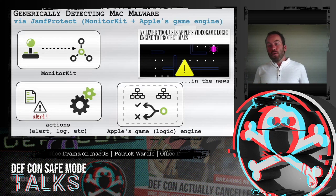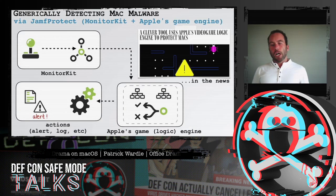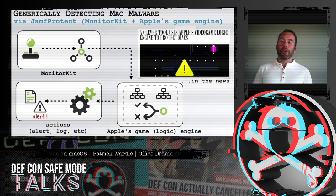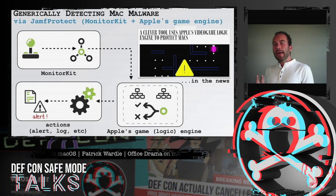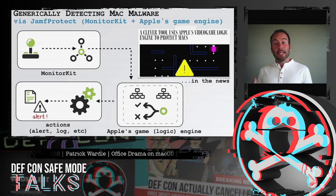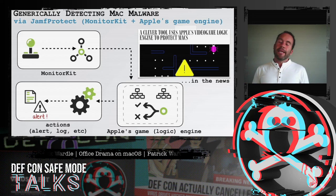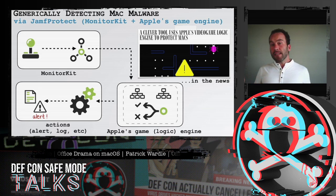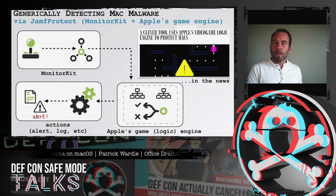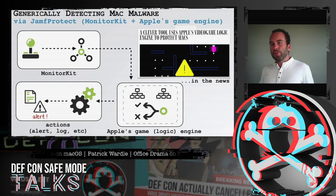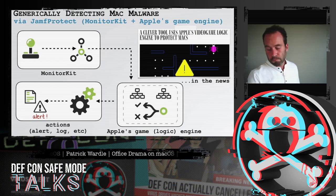At Jamf, we implement such monitoring logic in a framework we call MonitorKit. We then feed that monitoring data as well as our analytics and rules into Apple's game logic engine for evaluation. This gives us a powerful endpoint detection capability uniquely tailored for macOS. Based on our current rules, we were actually able to detect this exploit chain with no a-priori knowledge.